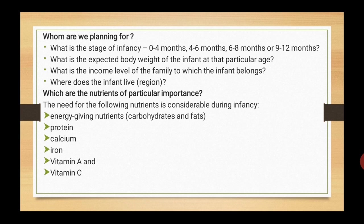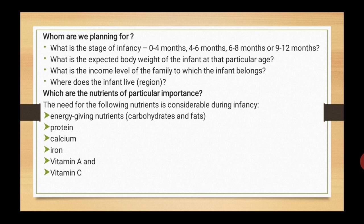Next is whom are we planning for? What is the stage of infancy — either 0 to 4 months, 4 to 6 months, 6 to 8 months, or 9 to 12 months? What is the expected body weight of the infant at that particular age? What is the income level of the family? And where does the infant live, i.e. the region? The nutrients of particular importance during infancy are energy-giving nutrients such as carbohydrates and fats, proteins, calcium, vitamin A, and vitamin C.